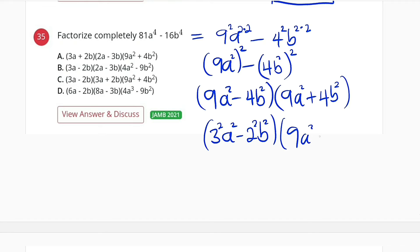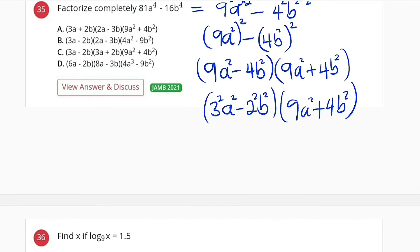We have 9a squared plus 4b squared, and I can combine the powers here, which is 3a all squared minus 2b all squared.